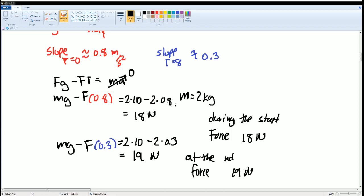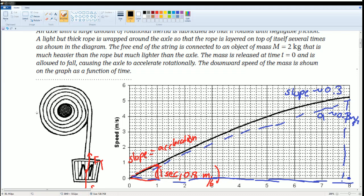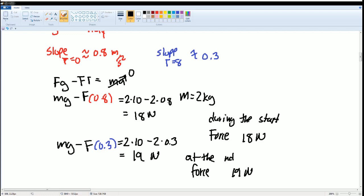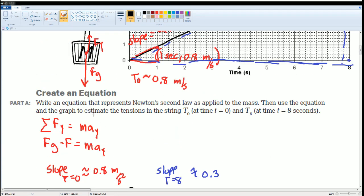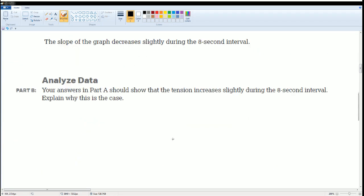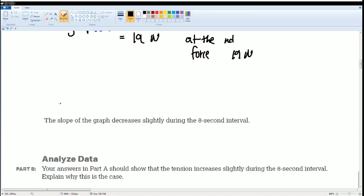Because the object is going to start unwinding. Don't worry about the calculation. Just understand how the force will increase over time. Why? Because the acceleration is going to increase. Why is the acceleration going to be increasing? Because think about the object already going down. The acceleration increases. So your answer in part A should show the tension increasing slightly during the 8 second interval.